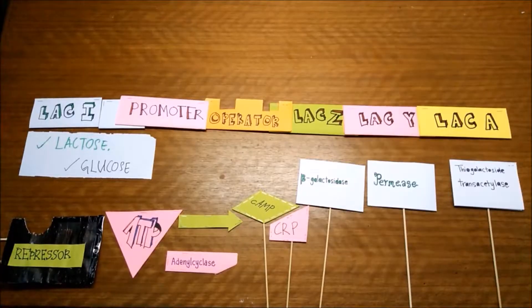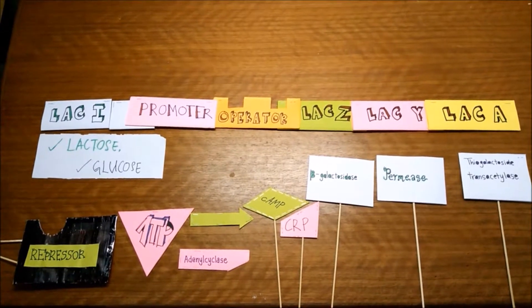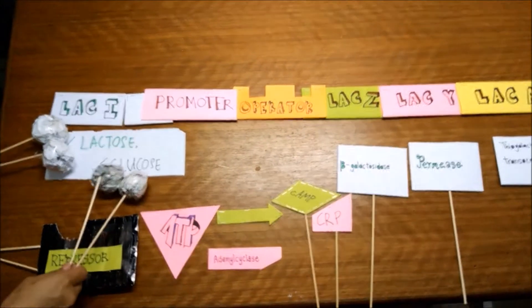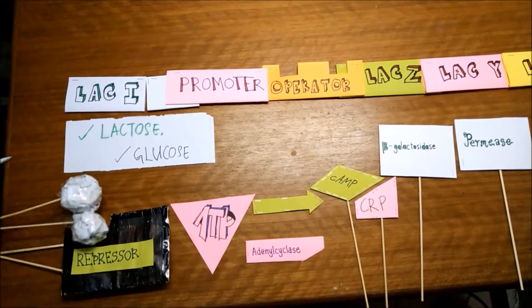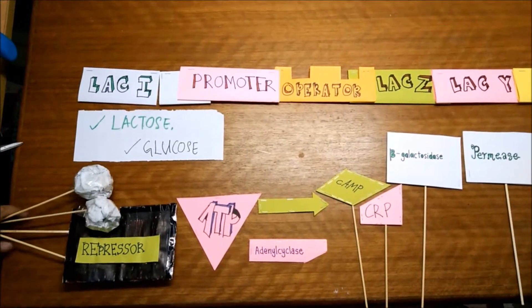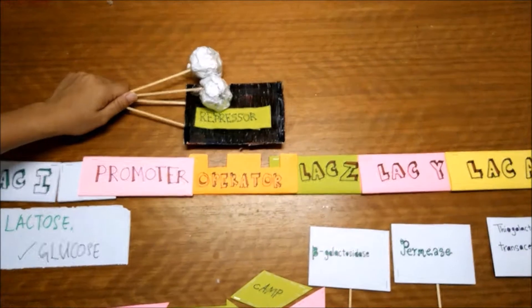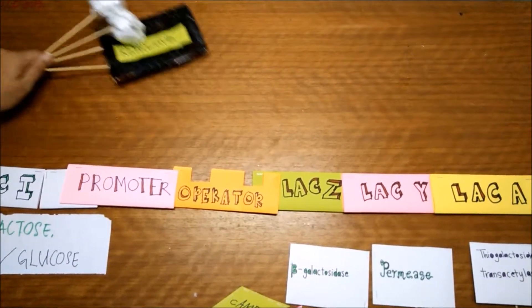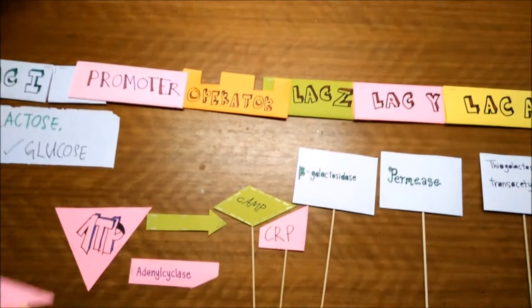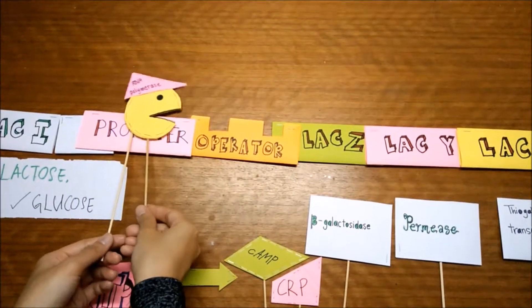So the next scenario, we have lactose and we have glucose. So lactose will bind to the repressor and change the conformational shape. The repressor cannot bind to the operator. So RNA polymerase will bind to the promoter and transcribe the genes.